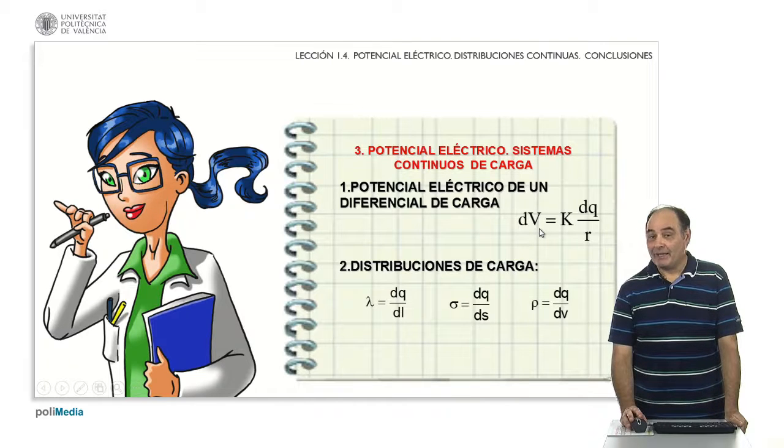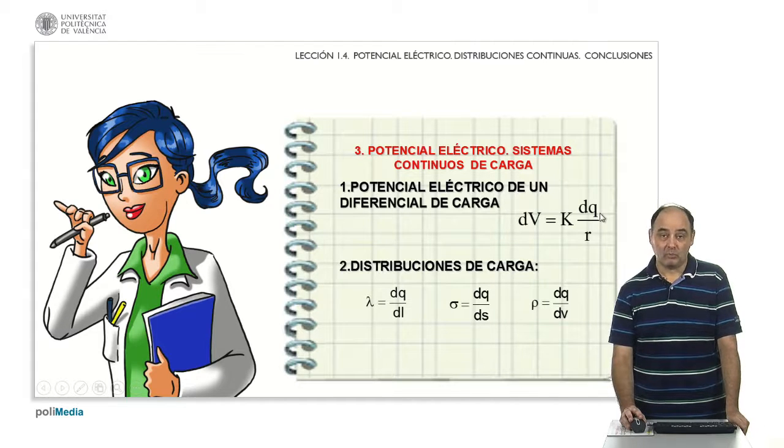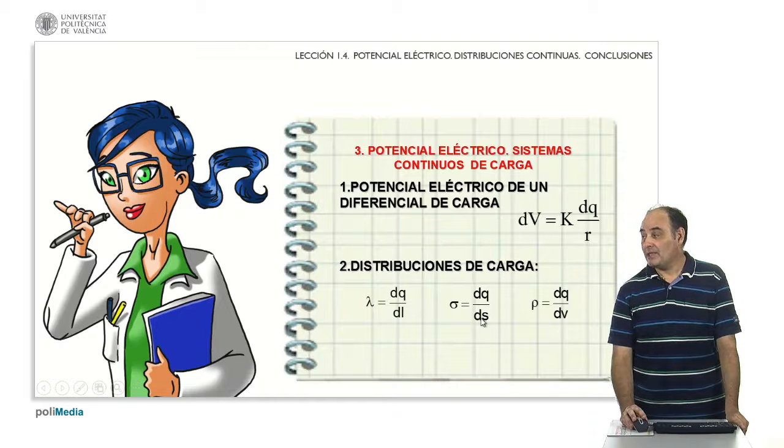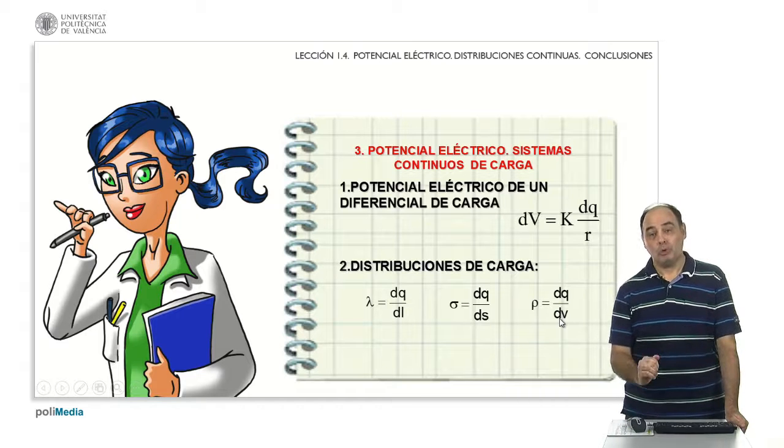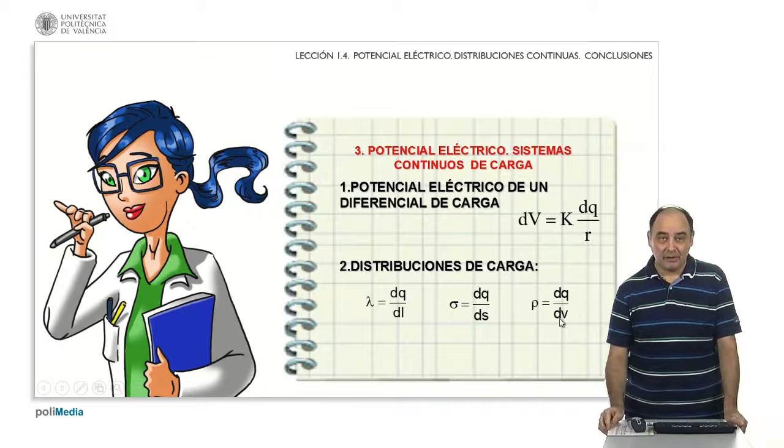So we can summarize it all in this way. First, for an infinitesimal point charge, this is the expression of its potential. Then, what I will have to do is to integrate this expression by replacing the differential of q by the corresponding expression, which will be λ by differential of l, σ by differential of s, or ρ by differential of v, depending on whether the distribution is linear, surface, or volumetric. Thank you very much for your attention.